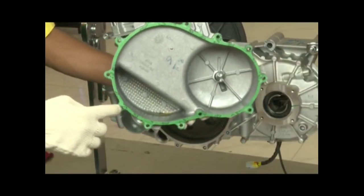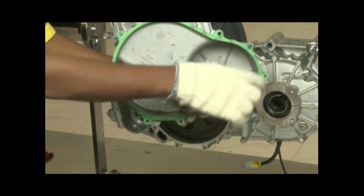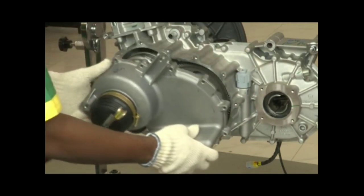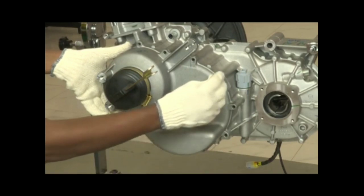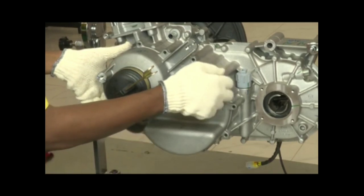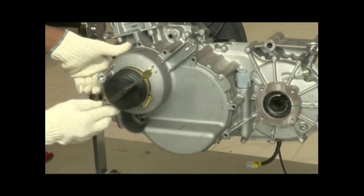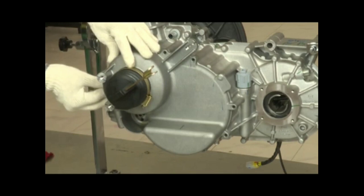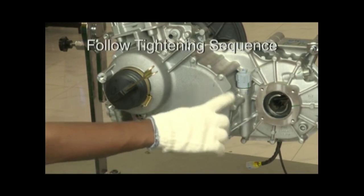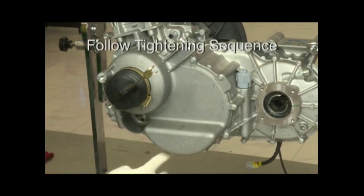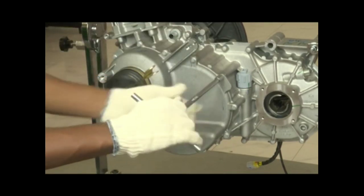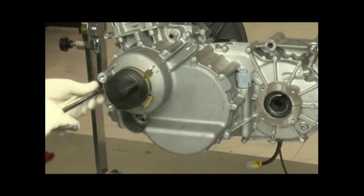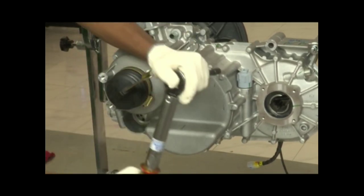Clutch cover fitment. Place the gasket. Install the cover. Tighten the dowel side first. Use 8 mm T-spanner. Tighten the bolts. Apply torque.